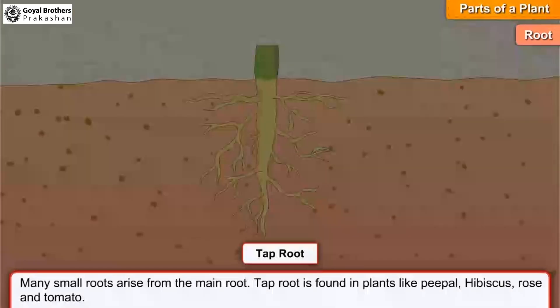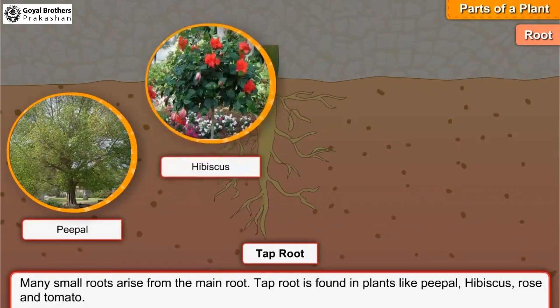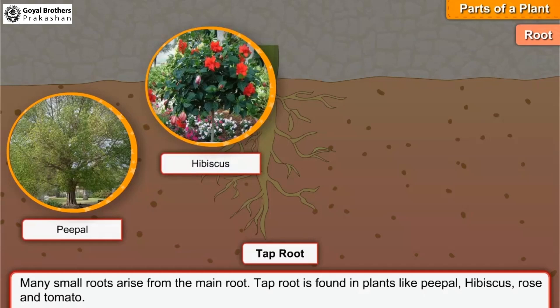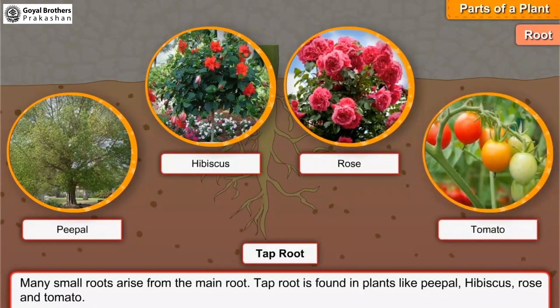Taproot is found in plants like peepal, hibiscus, rose and tomato.